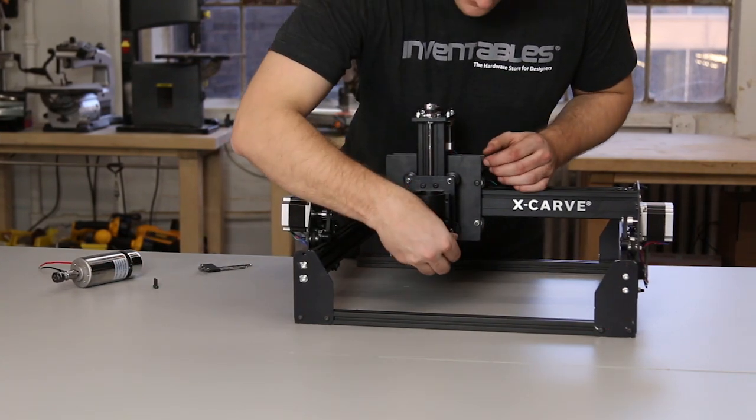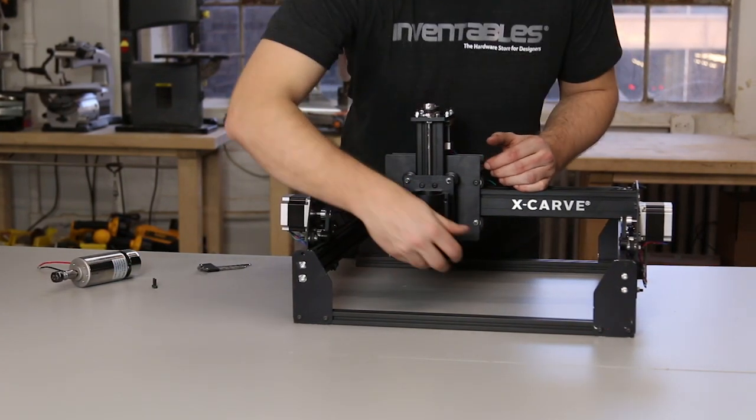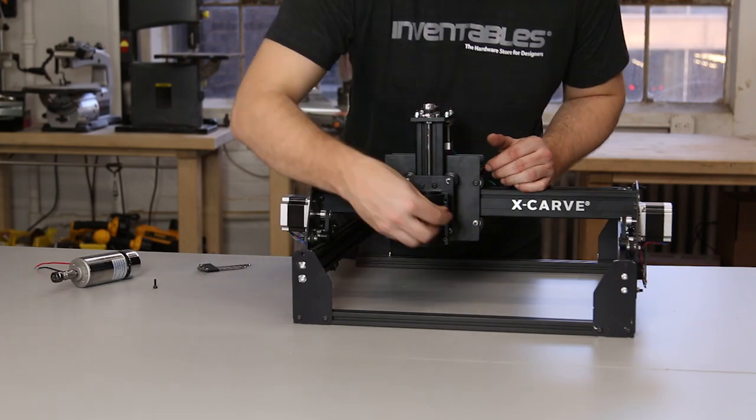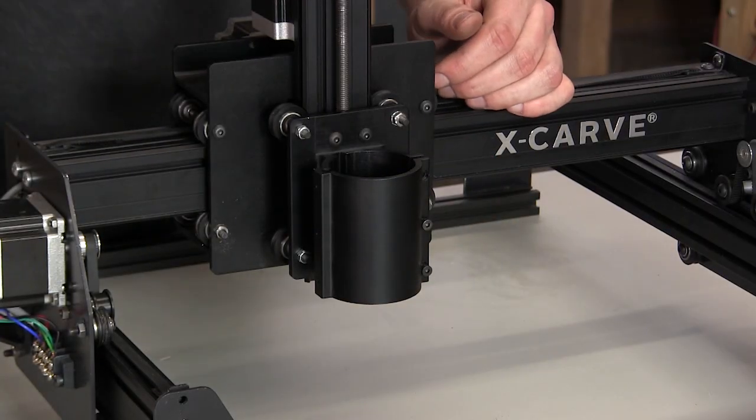Put the three M4 screws into the holes for the clamp of the spindle mount. Start the screws finger tight.